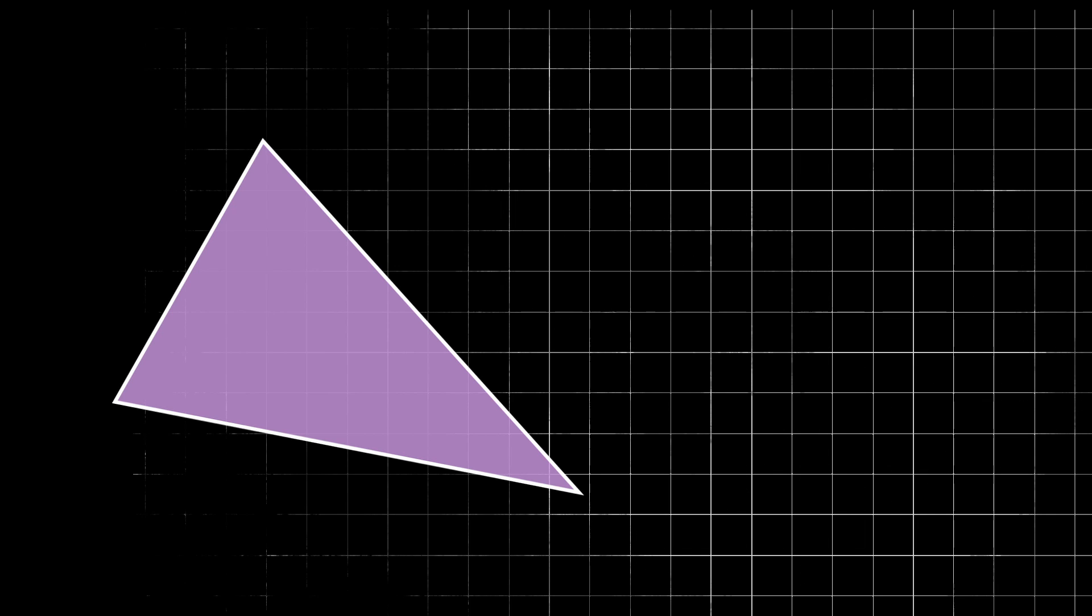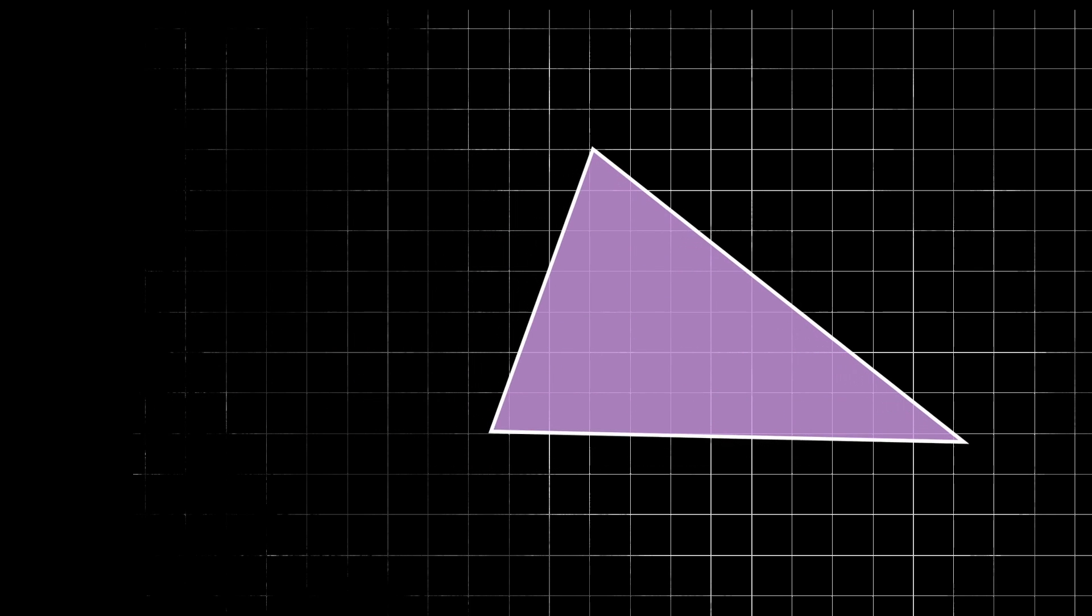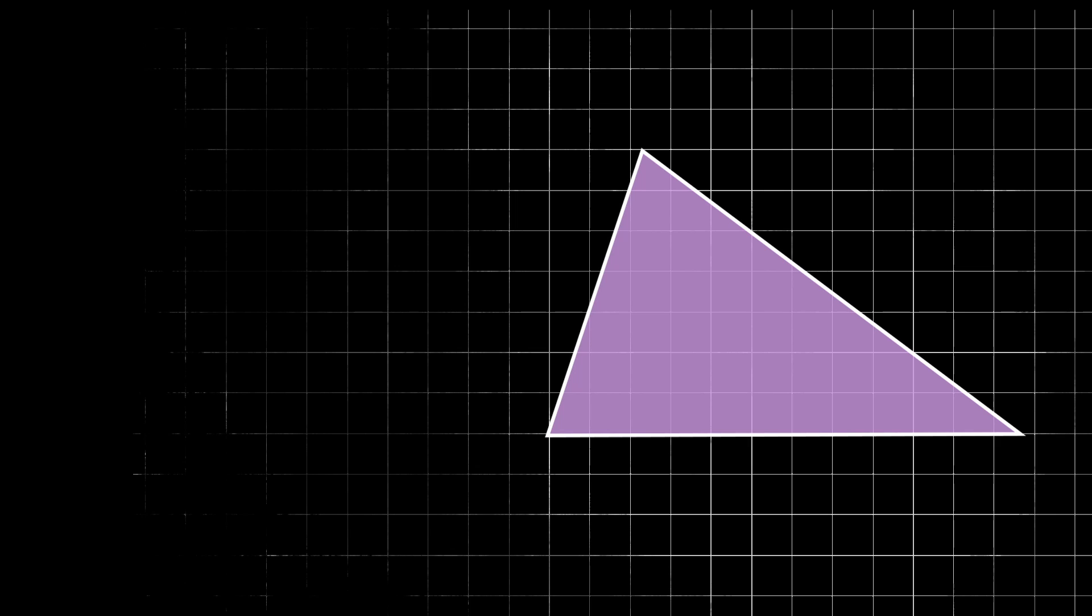I'm going to place this triangle on our graph paper and rotate it so that one of its sides is horizontal, and I want to draw a line intersecting with the top point of the triangle that is parallel with our base.